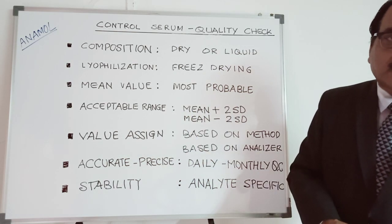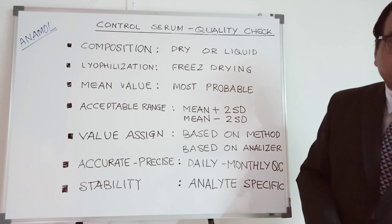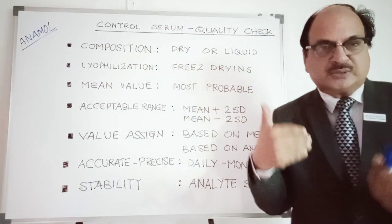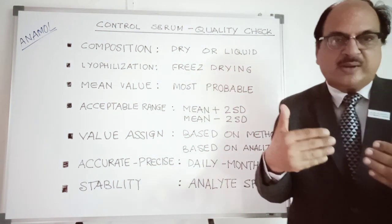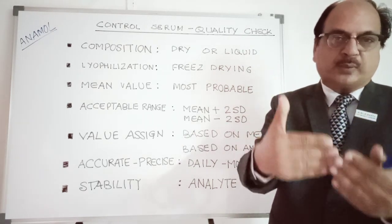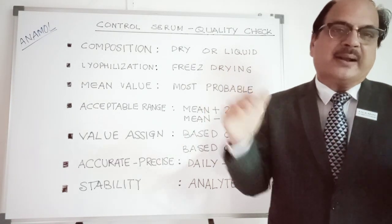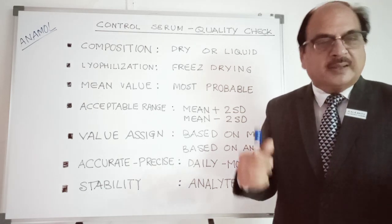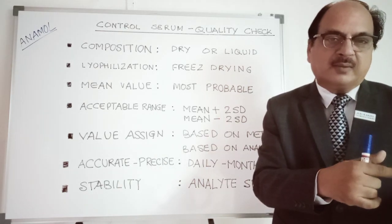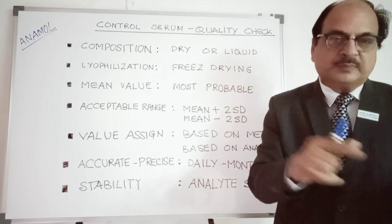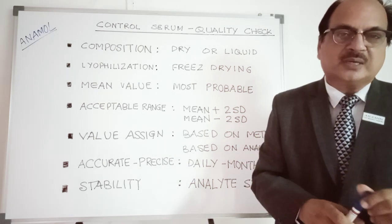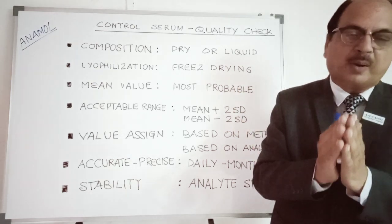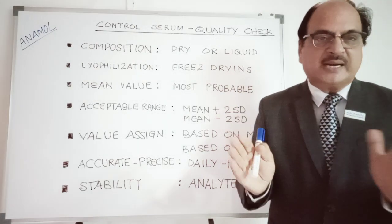When this control serum is reconstituted, just as it was dried, you add distilled water back to it to get the same volume. If it was 5 ml when dried, you add back 5 ml of water, and it becomes a homogenized control serum. It takes a little time for all components to dissolve properly.